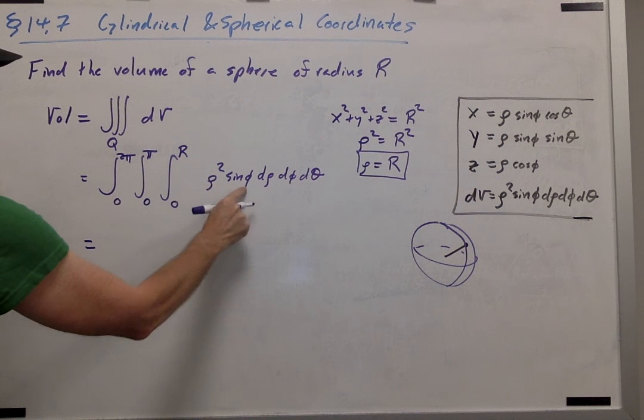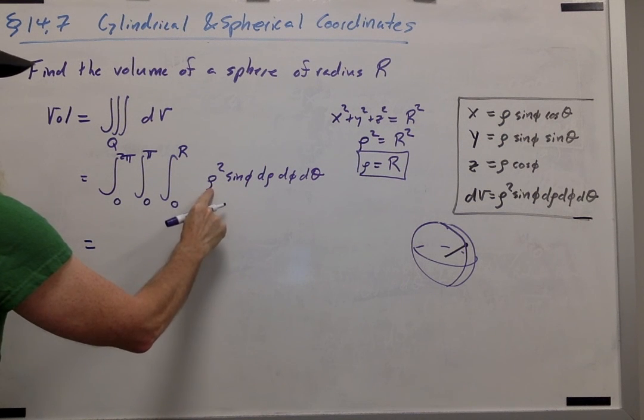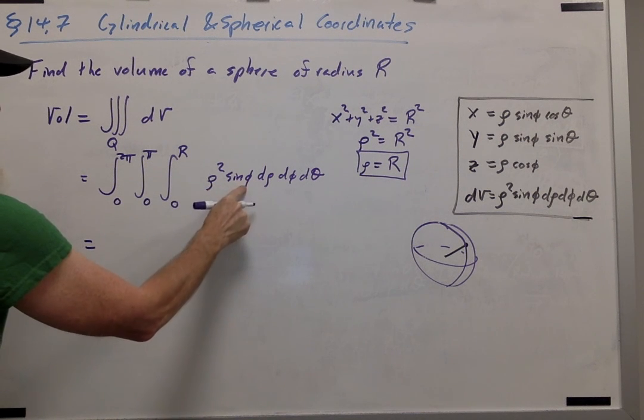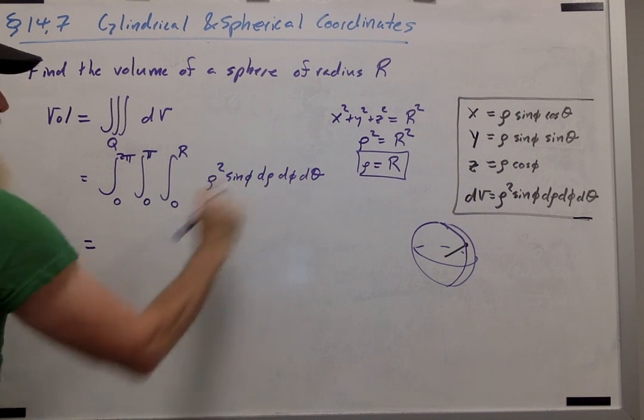Also notice that my integrand is a product of rho, a function of rho, a function of phi, and a constant function of theta.